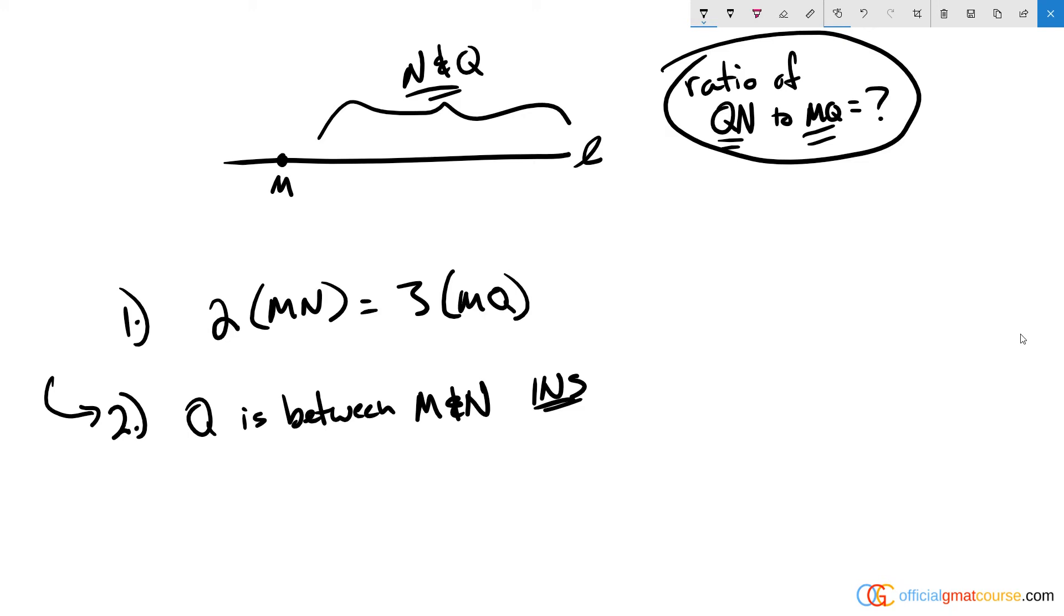Statement one says 2mn equals 3 times mq. Well, this doesn't say anything about qn, but can we construct some information here? So let's pretend that mn is equal to 3x. That means that 2 times 3x is equal to 3 times something else, and that must be 2x over here.